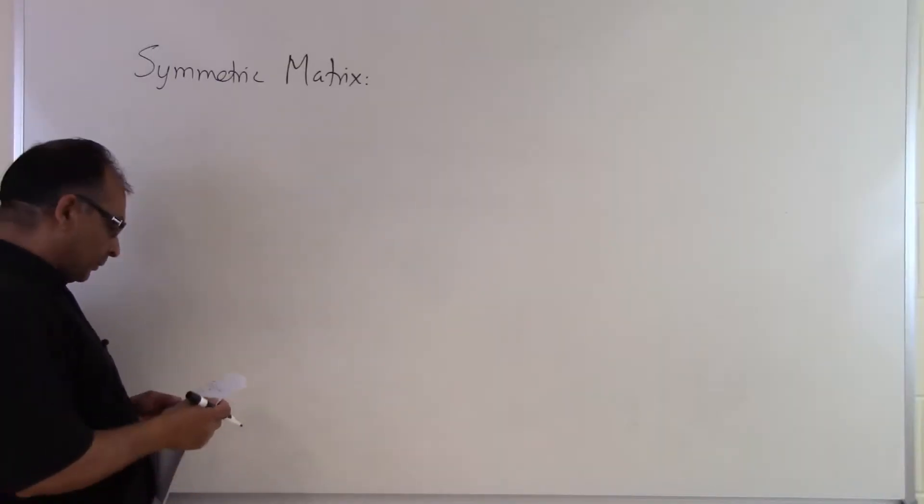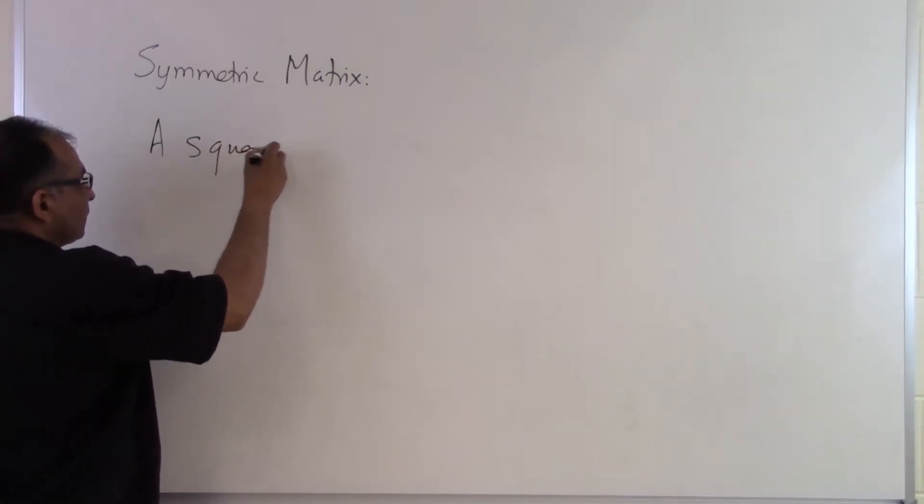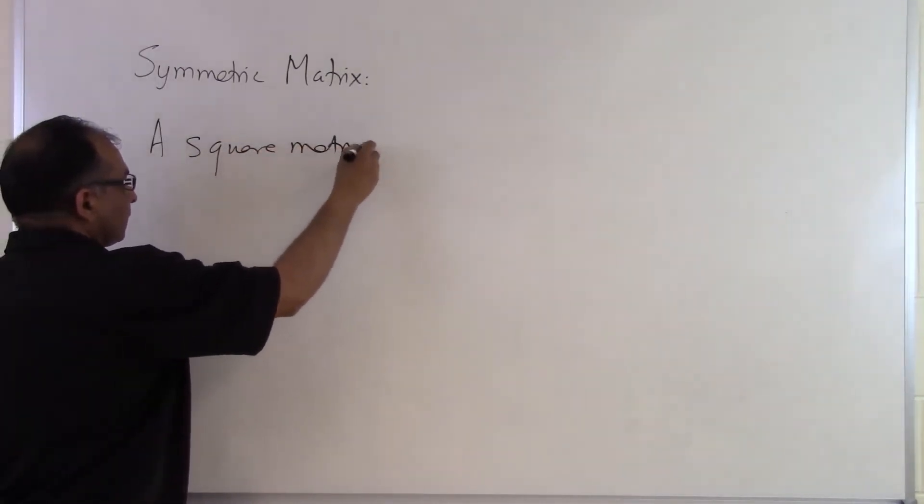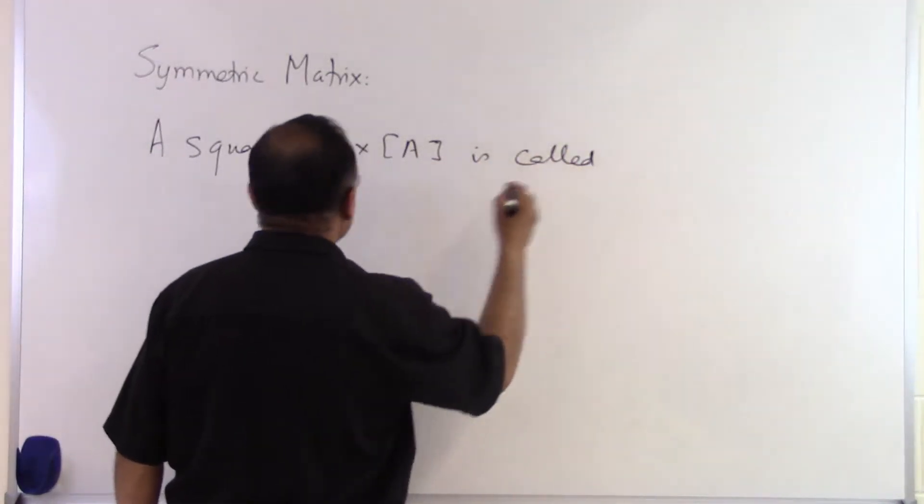In this segment we will talk about what a symmetric matrix is. So a square matrix A is called symmetric